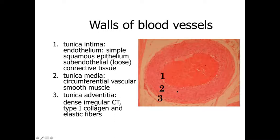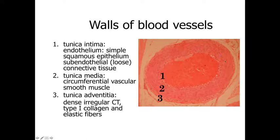Deeper to the tunica intima is a layer of smooth muscle referred to as the tunica media. The tunica media has lots of smooth muscle so that the blood vessel can expand as blood is forced through it, recoil without damage as blood pressure or volume is reduced, or constrict down and regulate the flow of blood. The smooth muscle is organized circumferentially, so we're looking at longitudinal profiles of smooth muscle cells wrapped around the circumference of the blood vessel.